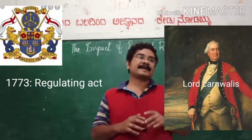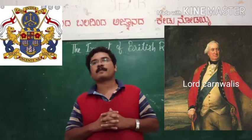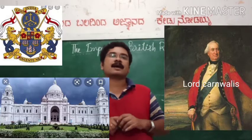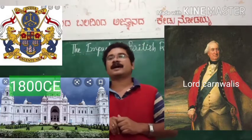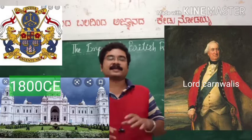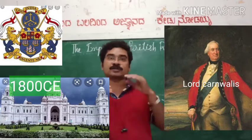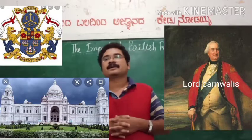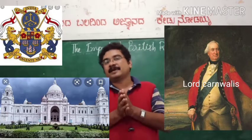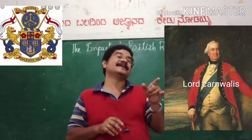In 1800 CE, Lord Cornwallis opened Fort William College in Kolkata for the benefit of people offering to join civil services. This was a very good concept implemented by Lord Cornwallis in those days. But this initiation did not find support from the directors of the East India Company.